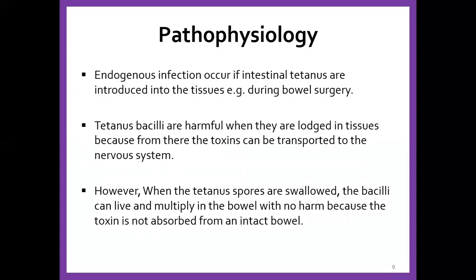Once you get an infection, the tetanus bacillus lodges in the tissues, from where the toxins are released. What is very important is that the bacteria itself does not cause the disease — it's the toxin it releases that goes up to the nervous system and blocks the work of the inhibitory neurotransmitters. This leads to constant firing, and that constant firing leads to constant contraction of the muscles — and that's where we have the problem.